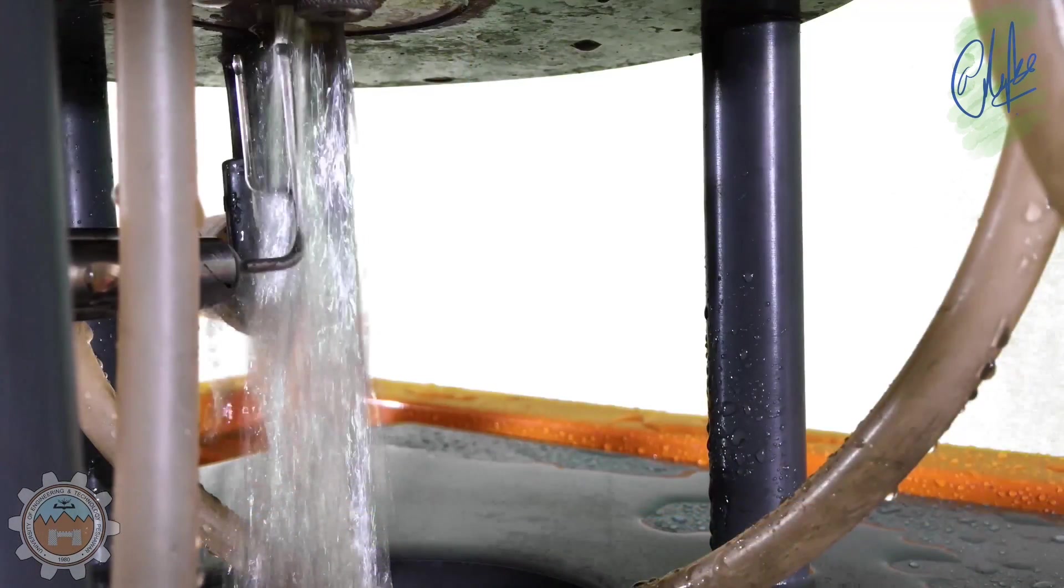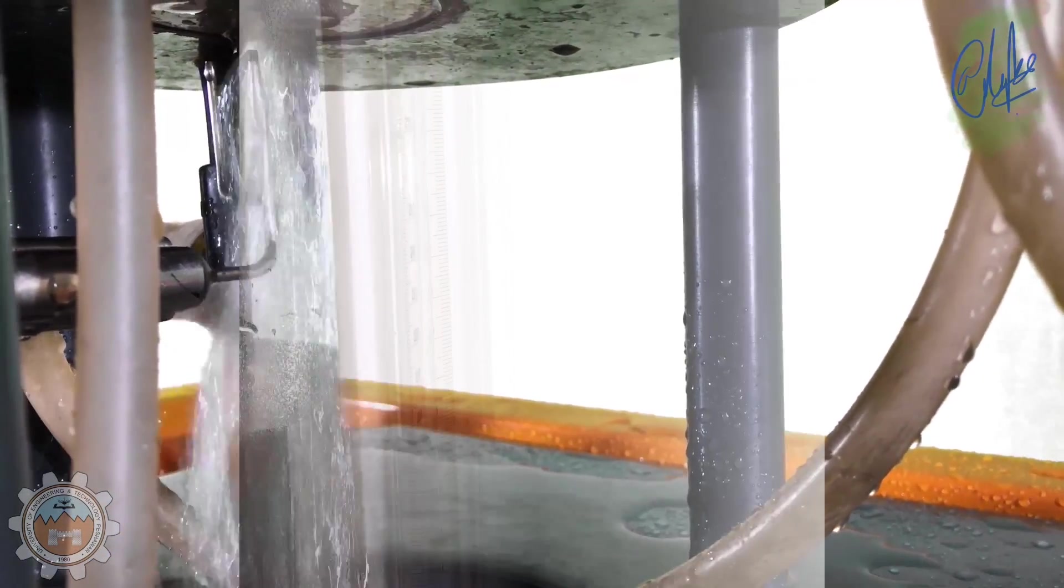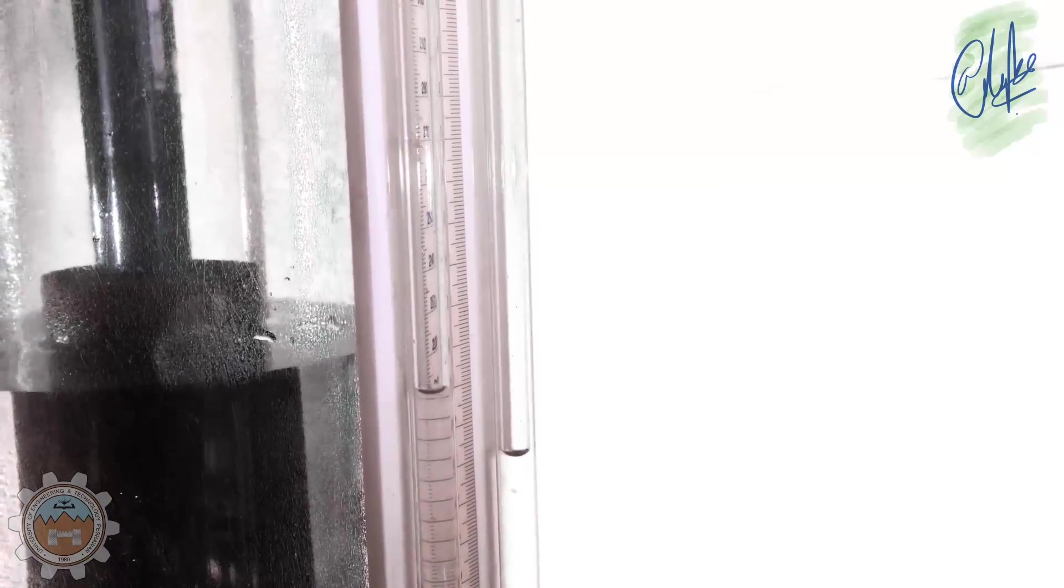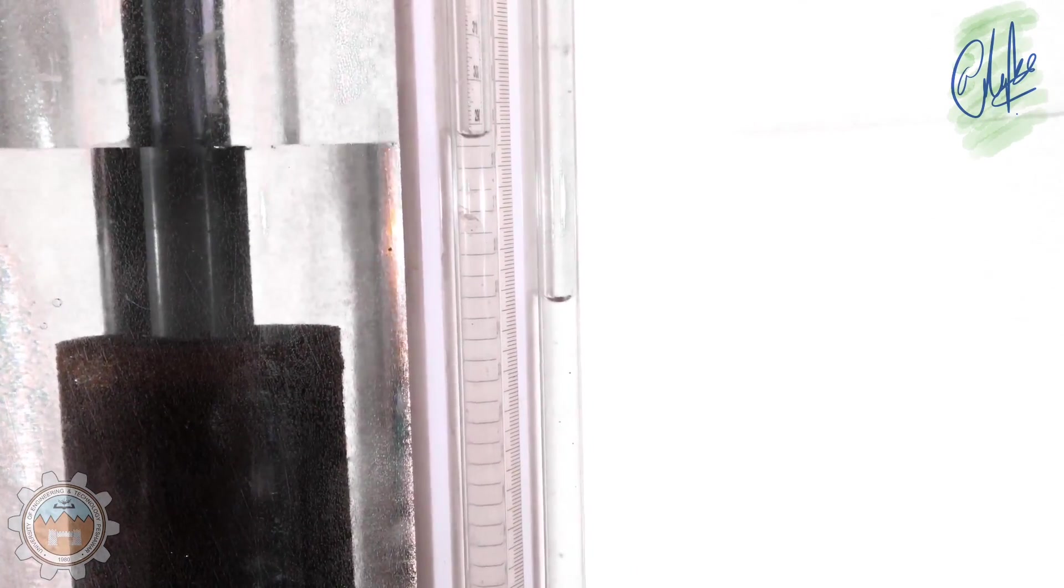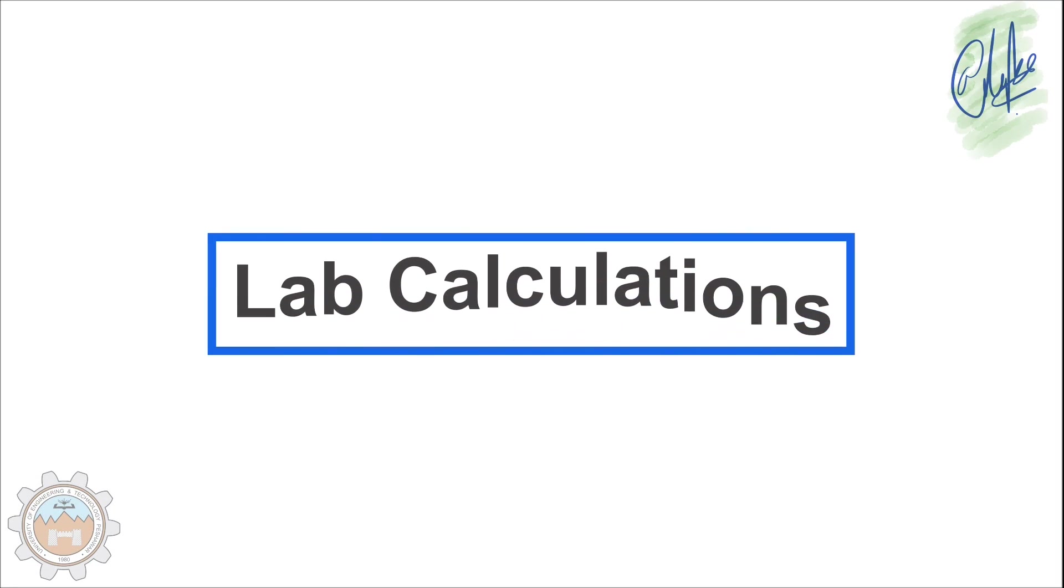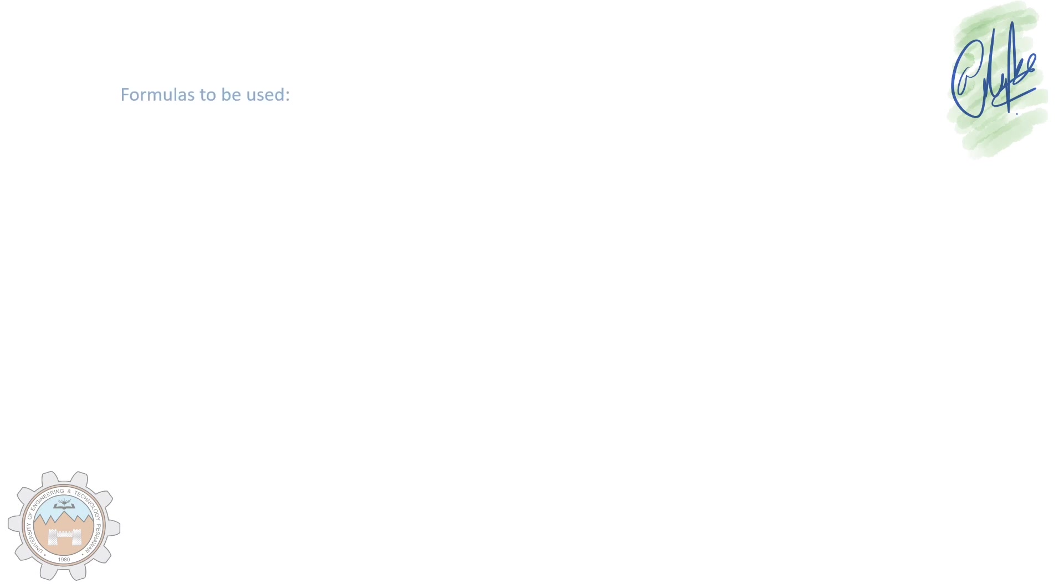For the second part you need to move the needle through the water jet from one side to the other side. Now note down the pitot tube and the venturi meter readings.